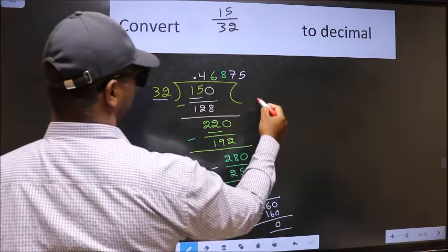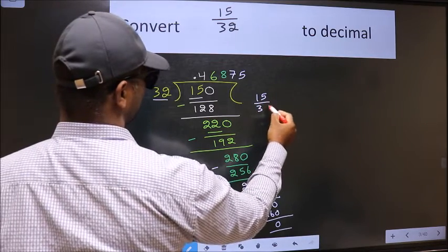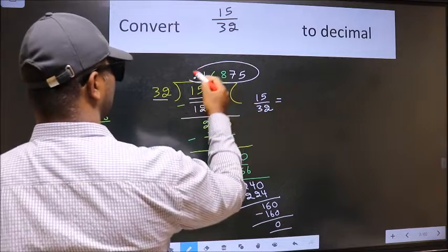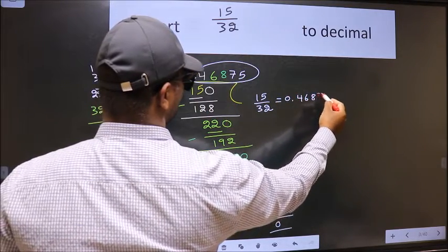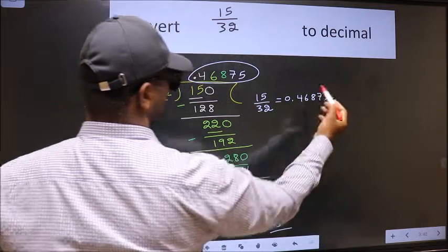Therefore decimal of 15 by 32 is this one. 0.46875 is our answer.